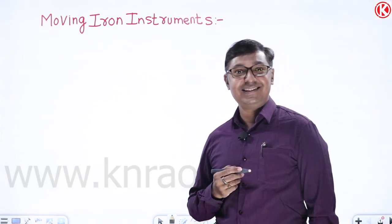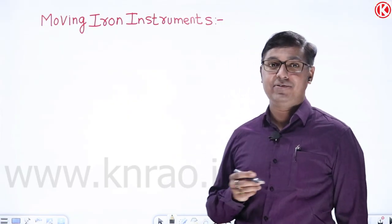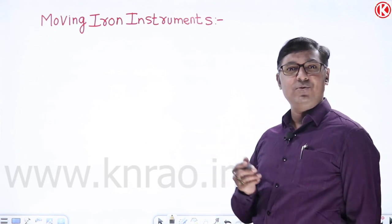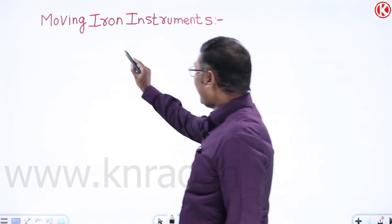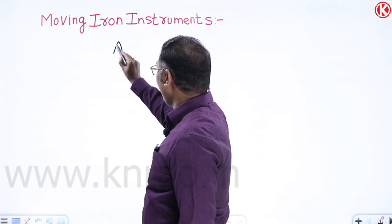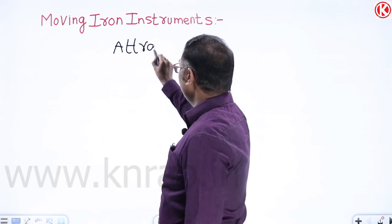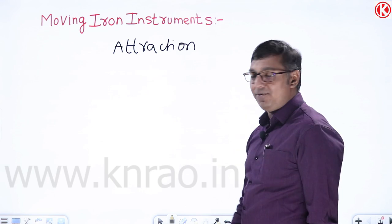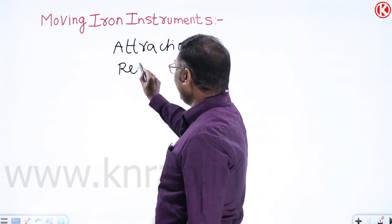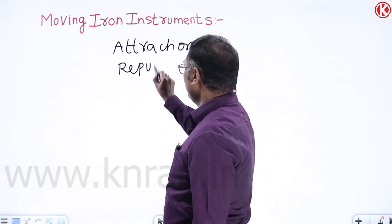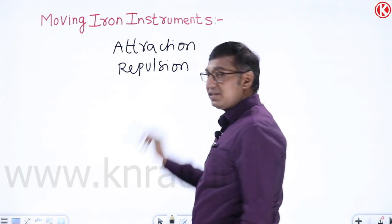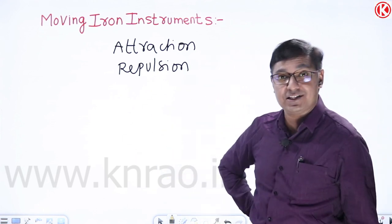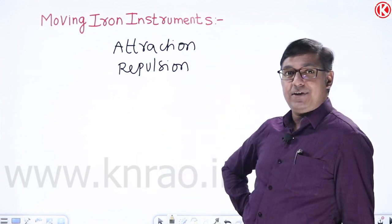Let us start with moving iron instruments. The different types are attraction type and repulsion type. The main working principle of moving iron instruments is self-inductance — specifically, the self-inductance of the fixed coil.